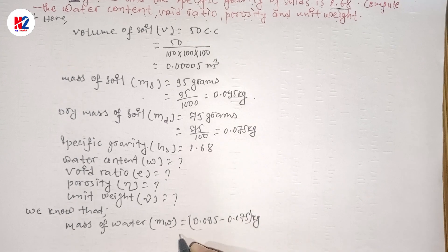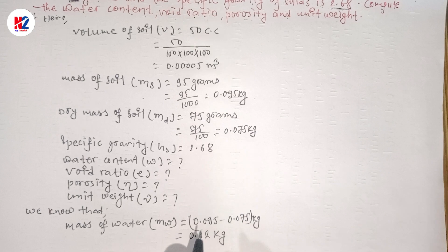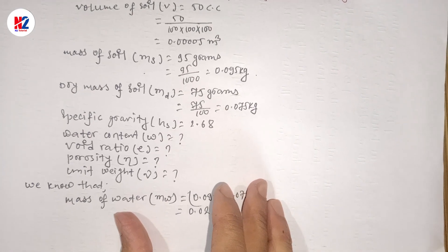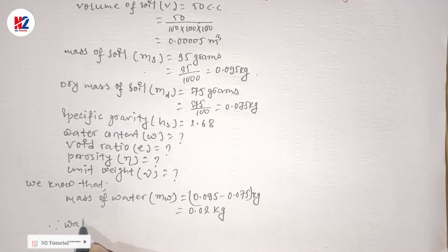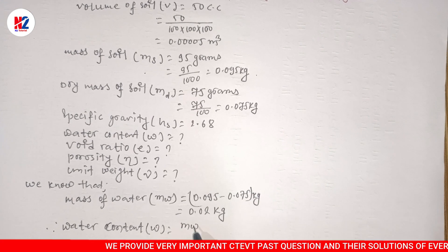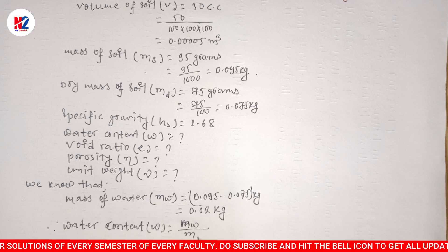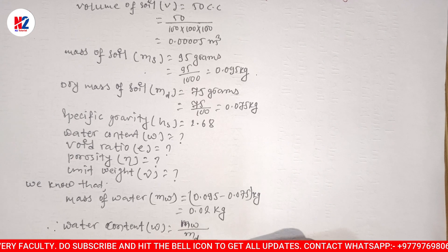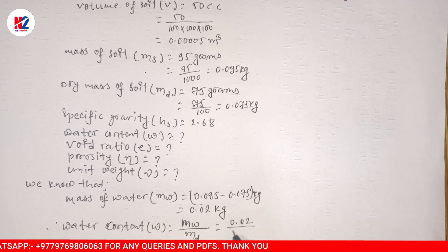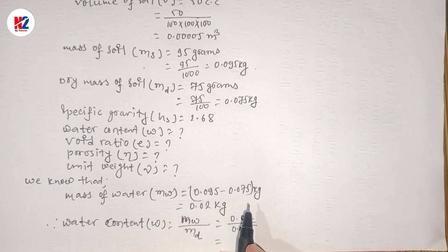So the mass of water is 0.095 minus 0.075, which gives 0.02 kg. Therefore, water content w = mass of water / dry mass of soil = 0.02 divided by 0.075. The calculated water content result is obtained from this division.